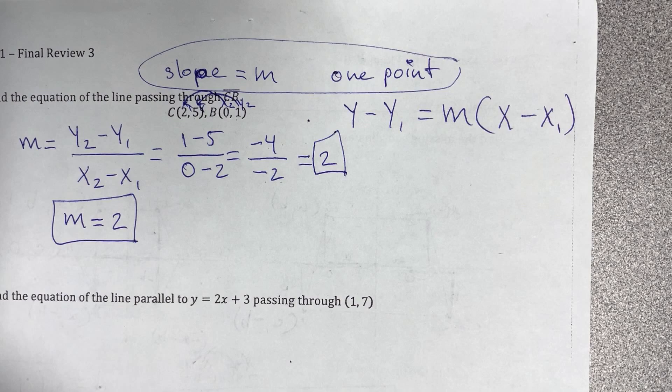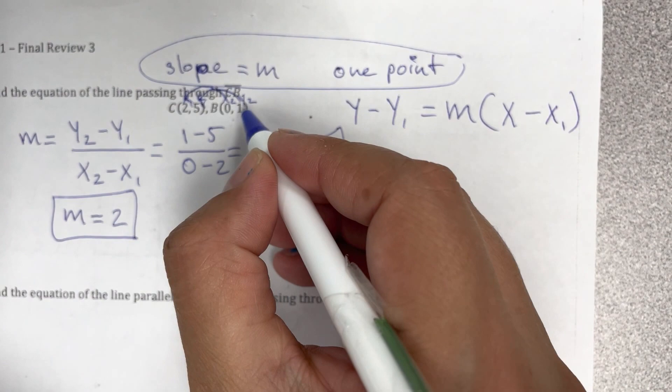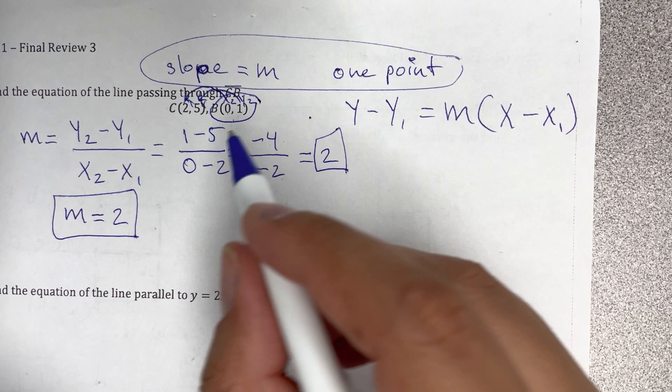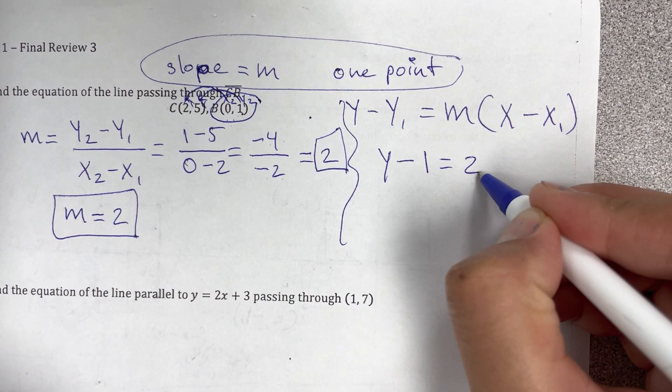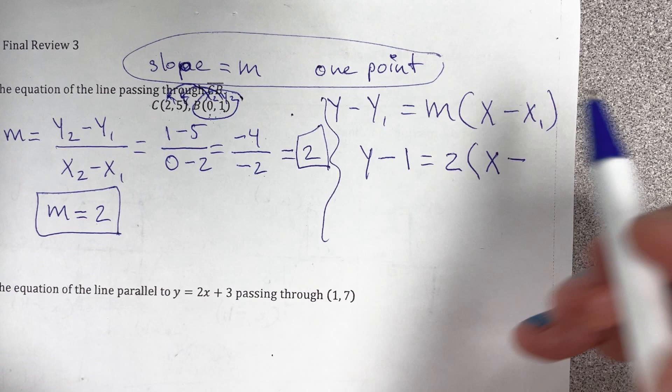Ya tenemos el slope. Ahora es elegir uno de los dos puntos y puede ser cualquiera, este va a salir la misma respuesta si hacen con uno o con el otro. So I'm going to choose the second one and it's going to be y minus y1, it's a 1. The slope is a 2, que el que encontramos, times x minus x, que es el 0.